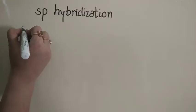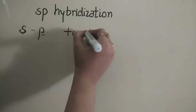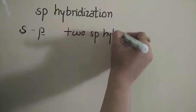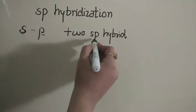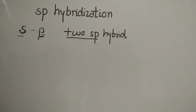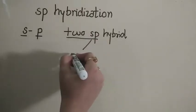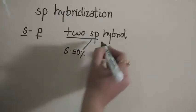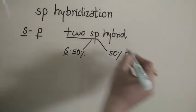In sp hybridization, 1 s orbital intermixes with 1 p orbital to form 2 sp hybrid orbitals. If sp is taken as 100%, then the s-character is 50% and the p-character is 50% — representing the contribution from the s orbital and the contribution from the p orbital.